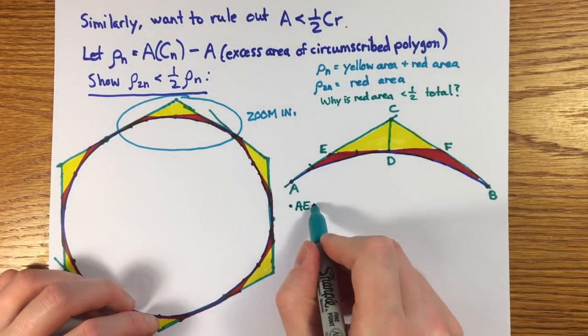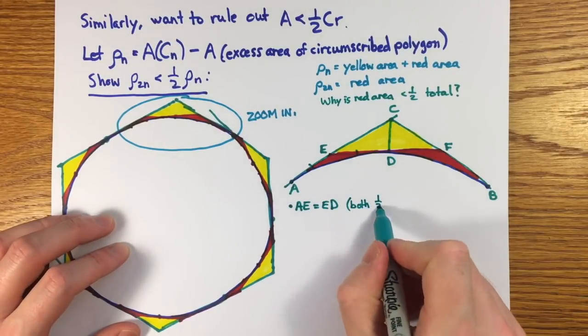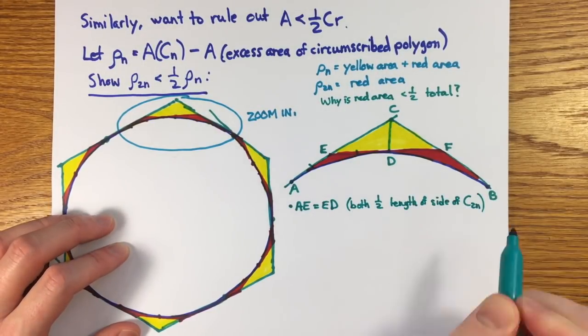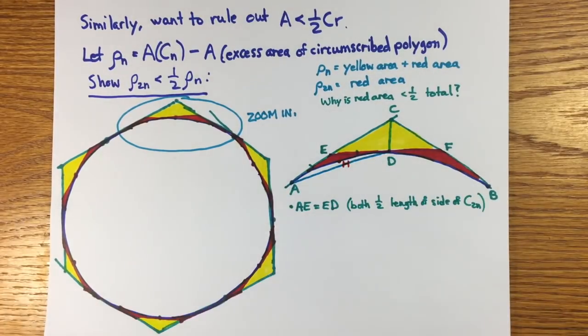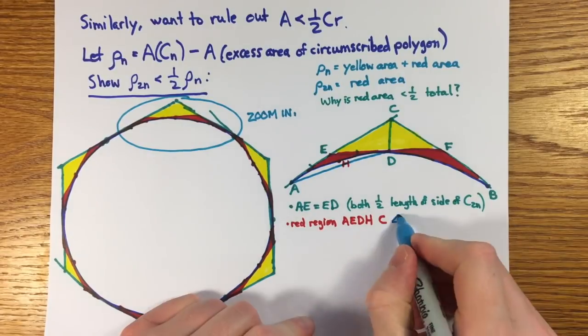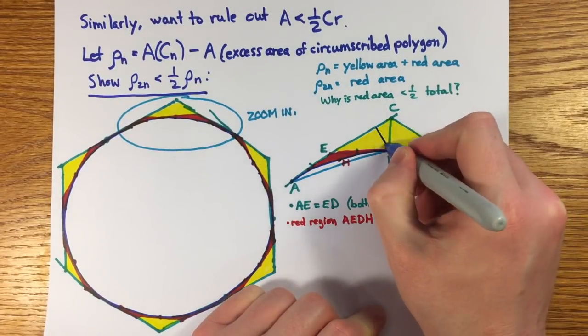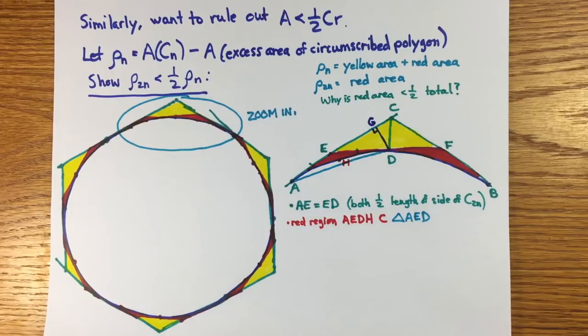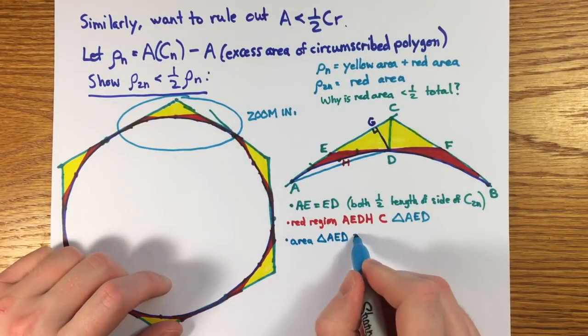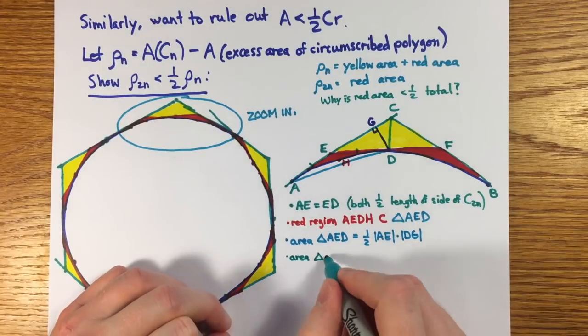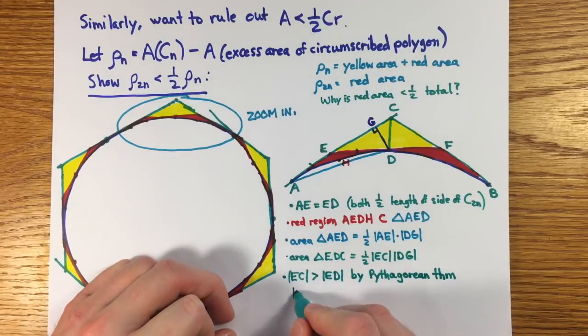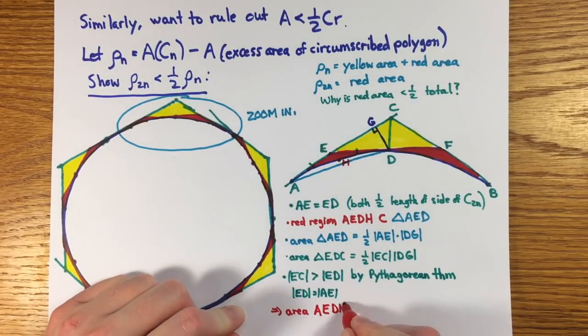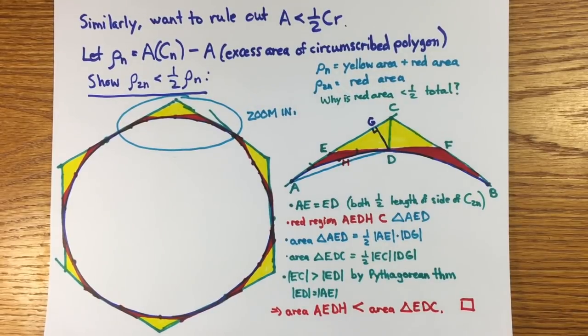Since C2n is regular, the segment AE is equal to the segment ED. Actually, any point like E at the intersection of two tangent lines to the circle is always equidistant from its points of tangency. That's an exercise. The red region that we care about, bounded by AEDH, is contained in the triangle AED, and I claim that the whole triangle AED has smaller area than triangle EDC. We can drop a common altitude to both, DG, and the base EC is longer than the base AE by the Pythagorean theorem. So rho 2 n is less than 1 half rho n.